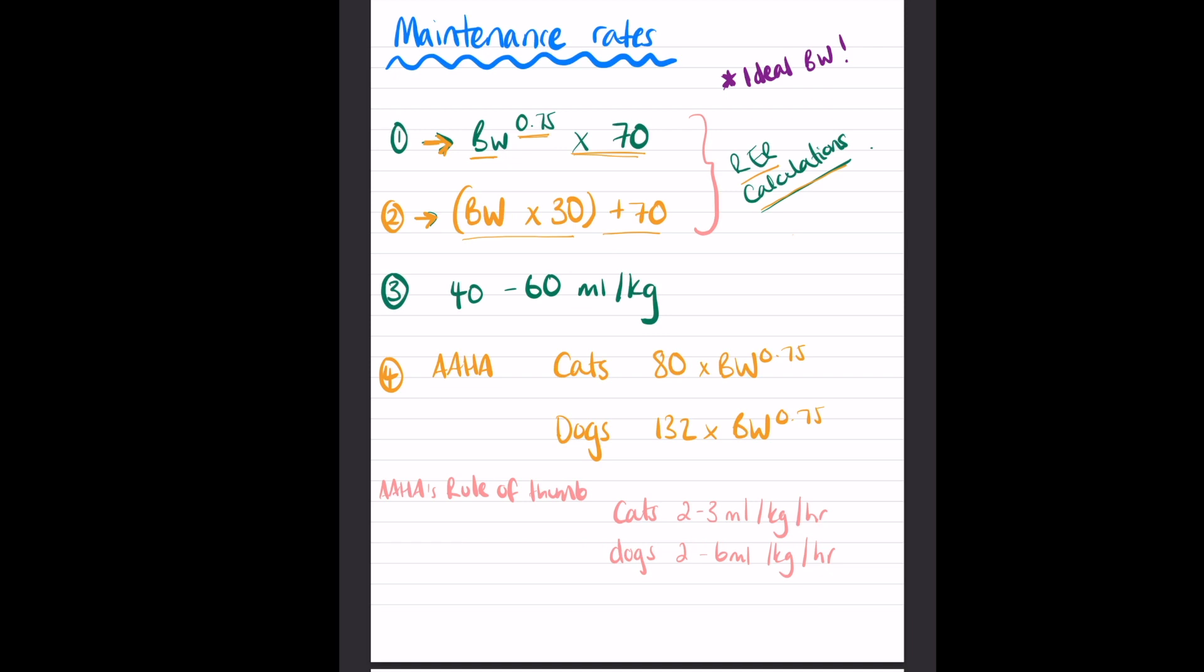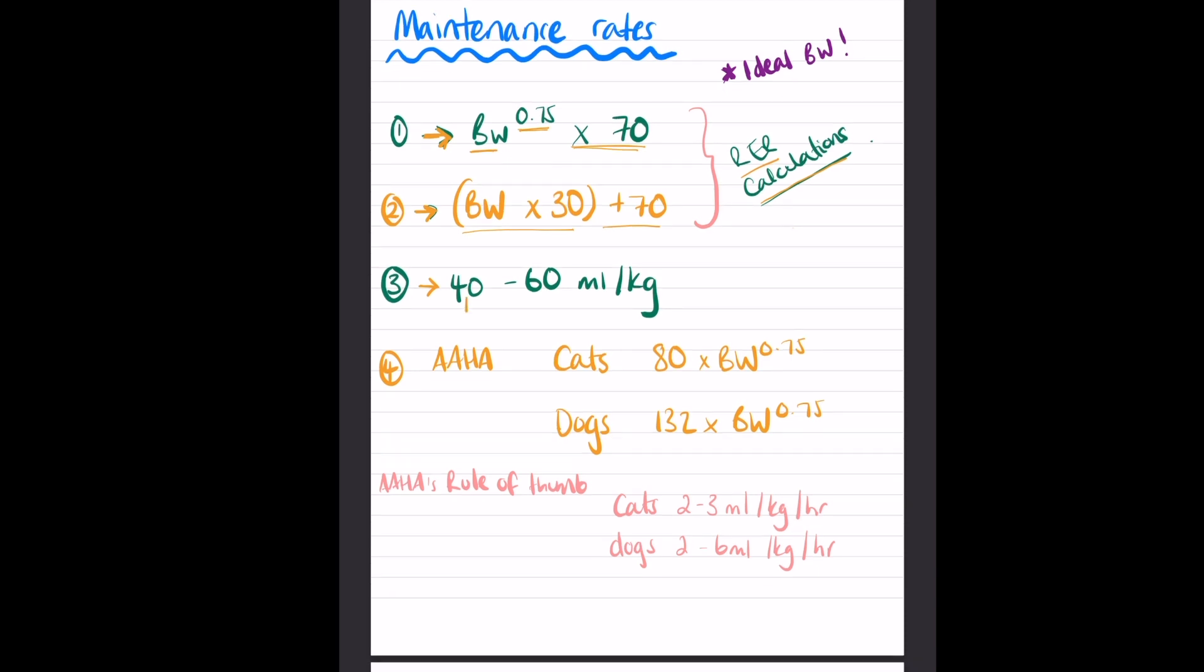You would also not be wrong if you broadly referenced 40 to 60 mls per kilogram per day. Generally, the larger the animal, the less requirement they have, so it'd be a large breed dog. The smaller the dog or cats would maybe usually go the higher end, so 60. It's a bit more of a guess than number one, but it's a rough margin. My first clinic went with 50 for a lot of things - right in the middle here, 50 mls per kilogram.